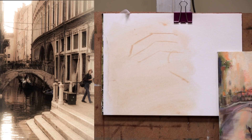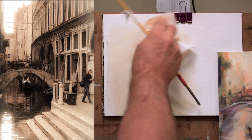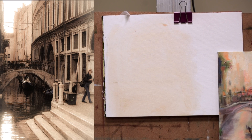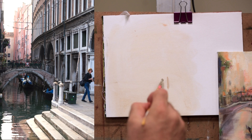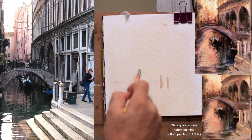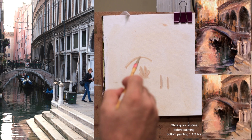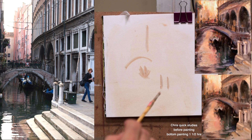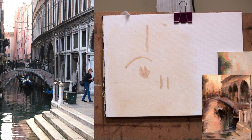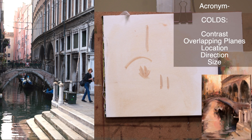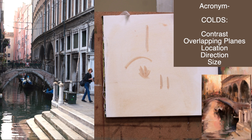Another thing that happens in a painting is what we call fragmentation. I have a couple columns here on the right. I have a boat, I have a bridge, and I have a building. Right now they're separated. So contrast, overlapping planes, location, direction, size — overlapping planes harmonizes and ties things together.